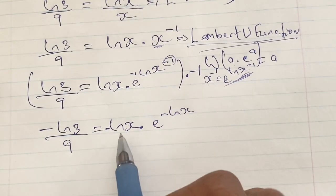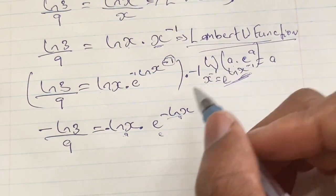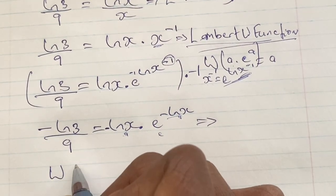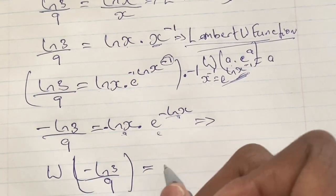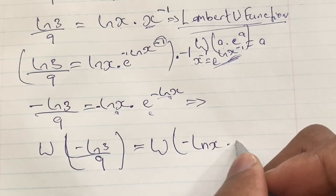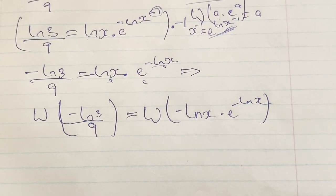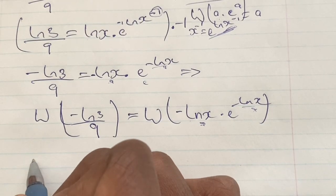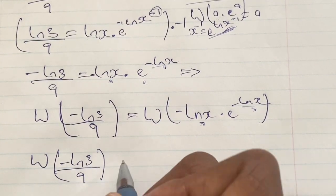Now we can clearly see we have a in the base, a in the power, and e in the middle — matching the form a times e to the power of a. This means we can apply the W function to this expression. Applying W to both sides: W of negative ln 3 over 9 is equal to W of negative ln x times e to the power of negative ln x. Applying W to the right side gives us a, which is negative ln x.